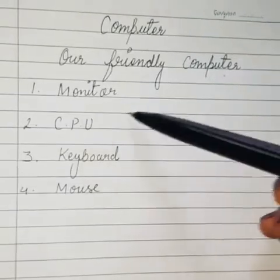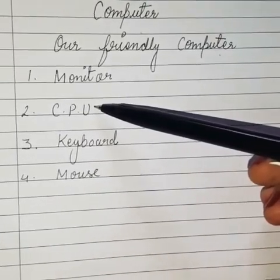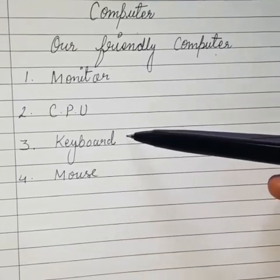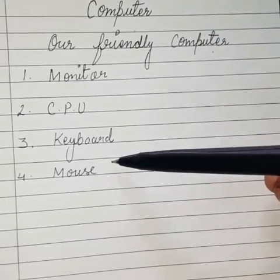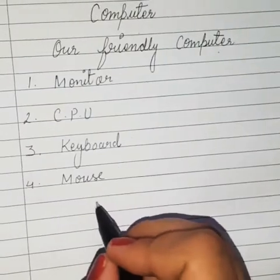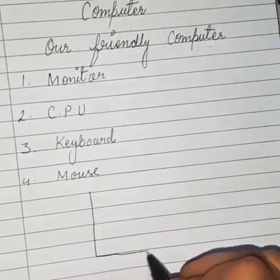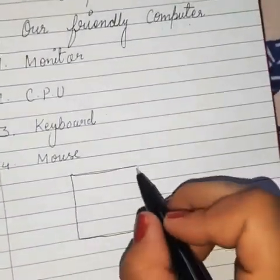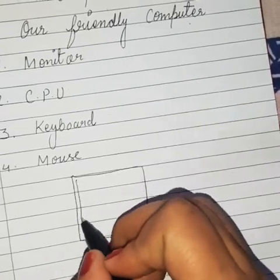For now, we will focus on only these four parts of a computer. I have already taught you the uses and functions of these parts. Monitor displays things to us, CPU is the brain of the computer, keyboard is helpful to write something on the monitor, and mouse is helpful to point on the screen.